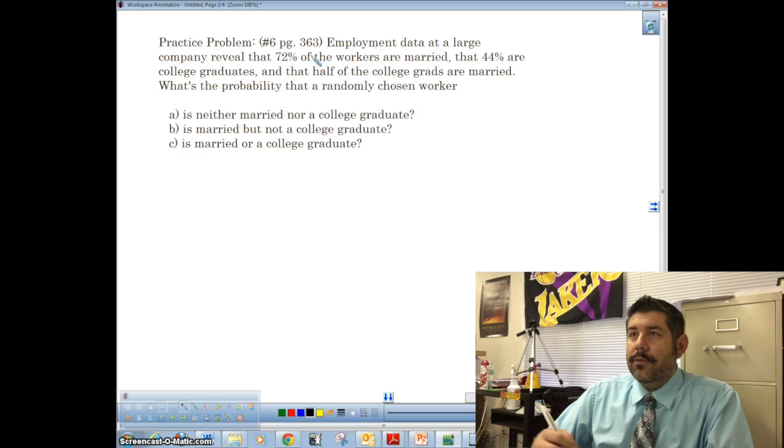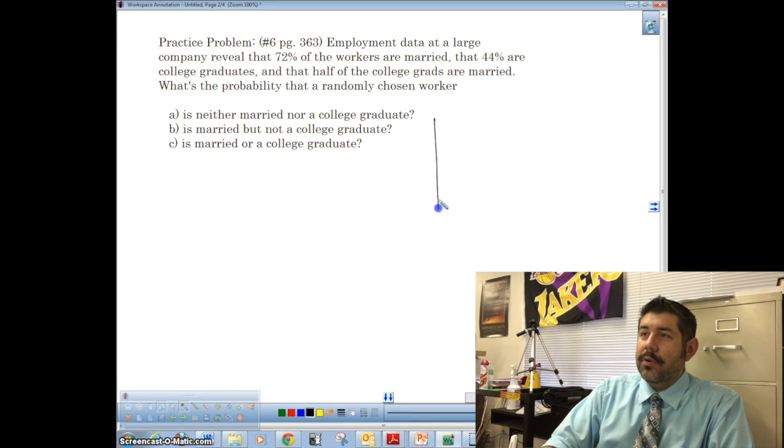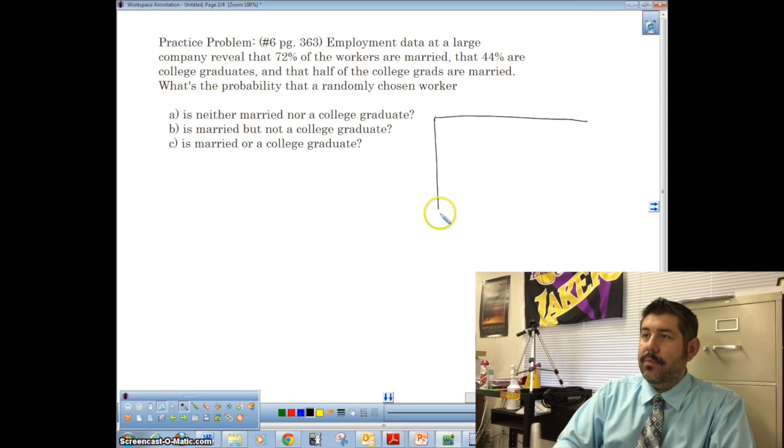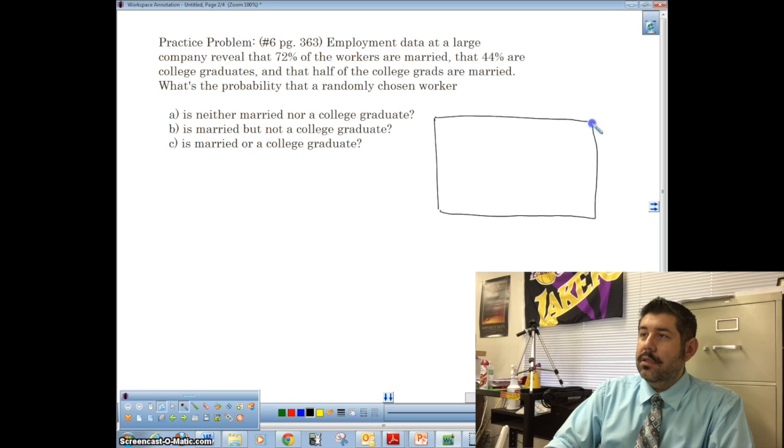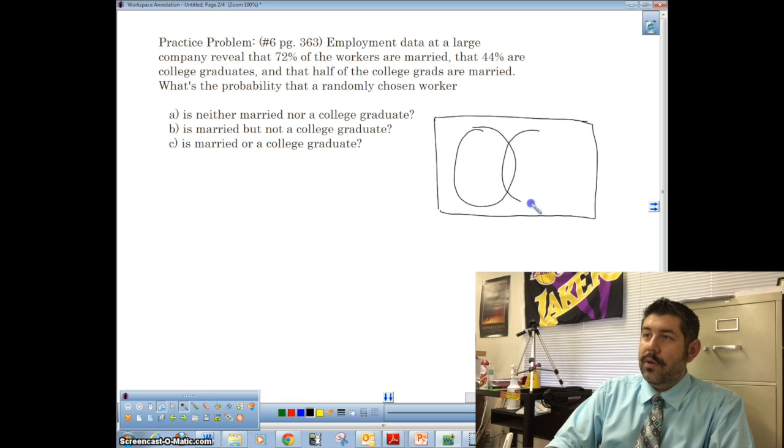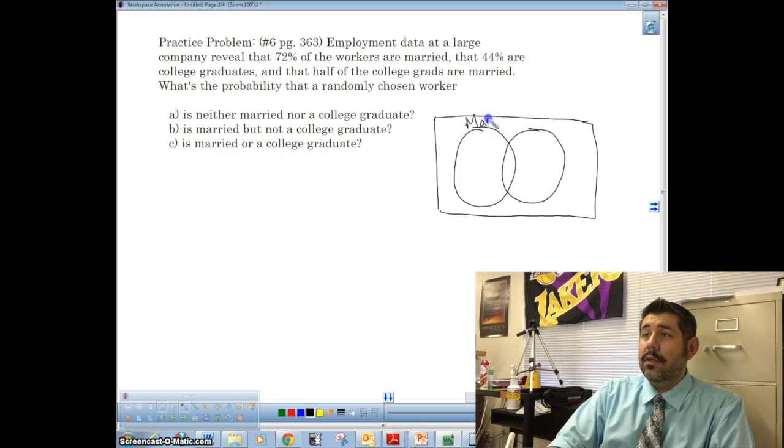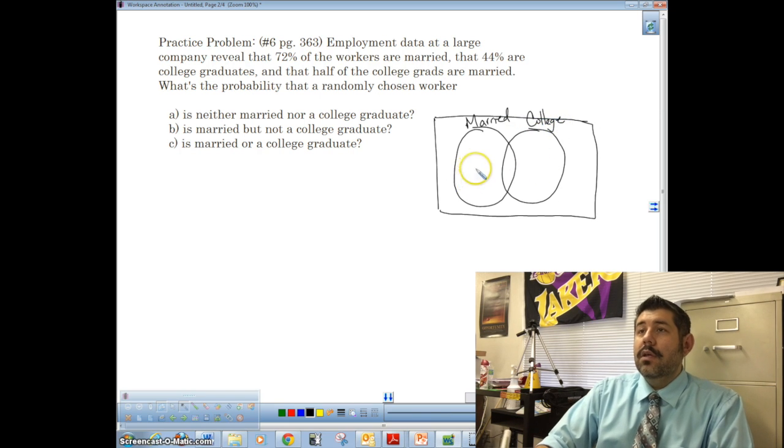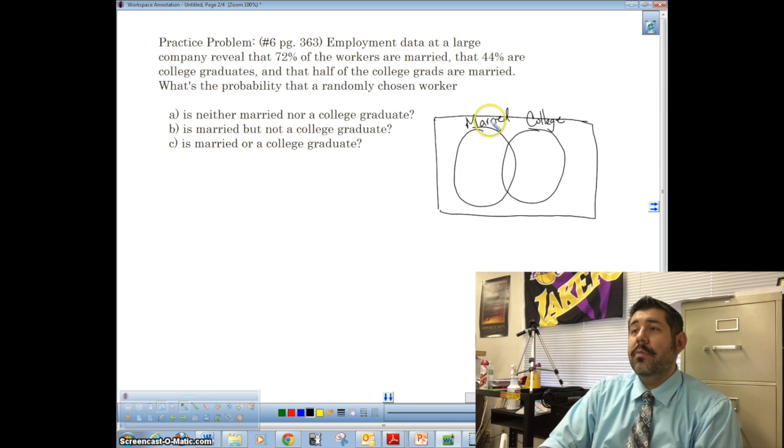So you can read that through there. Okay. So I'm going to create my Venn diagram here. Just checking real quick. I'm going to be in the way. Try right better this time. Okay. So I've got my two circles. The first one is for married. And the second one is for college grad. 72% are married. 44% are college grad. And that half of the college grads are married.